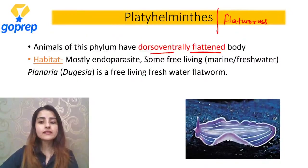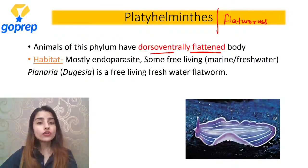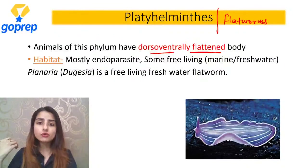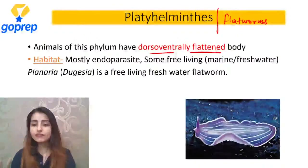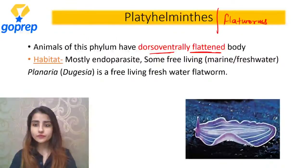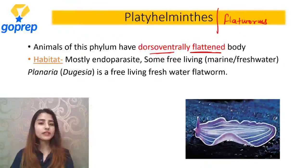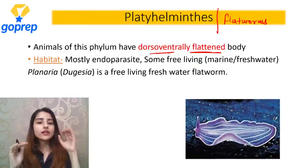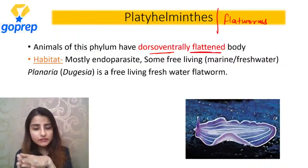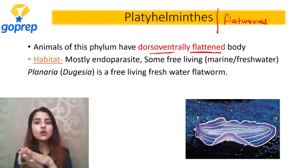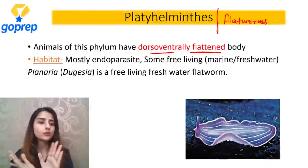People are asking where notes will be available. For notes, you have to enter the Telegram channel - vahaan par you will get all the PDFs of every session. So the first property: animals belonging to Platyhelminthes are dorso-ventrally flattened. That is why these are called flat worms.